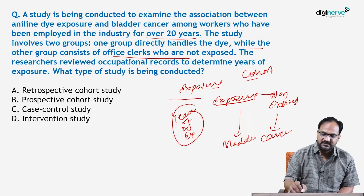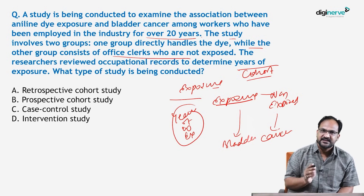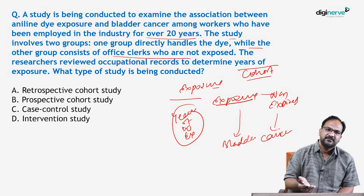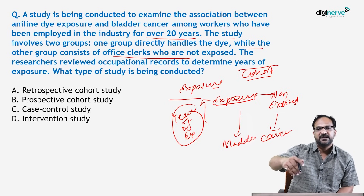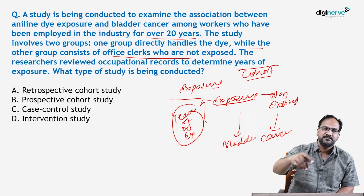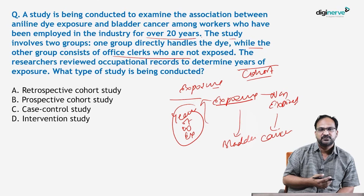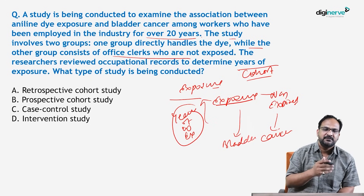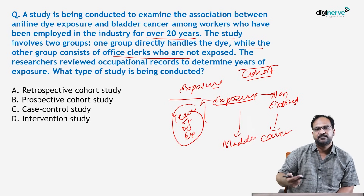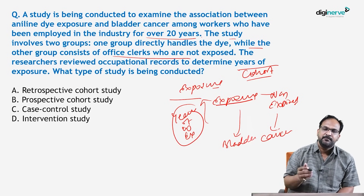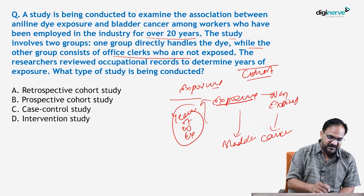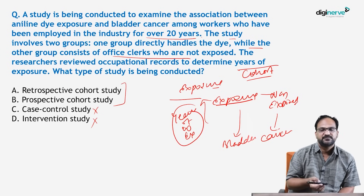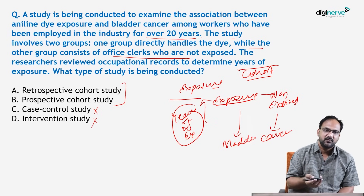This study will not be a case-control study, because in case-control we try to find out exposure from the patient. Here, we are going back in time to establish our cohort — for example, a person appointed 20 years ago was at that time free of disease and unexposed. We then find out after how many years the person developed the disease. Since we are going back in time, this is a retrospective cohort study, not case-control, intervention, or prospective cohort.